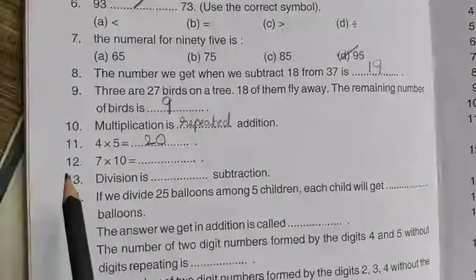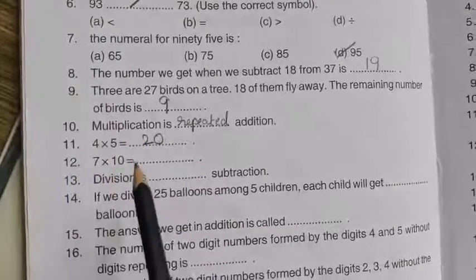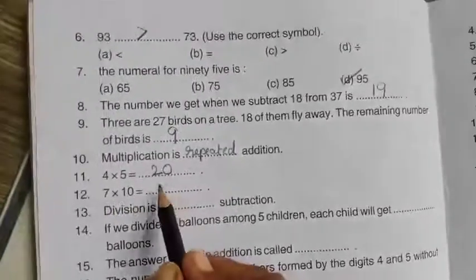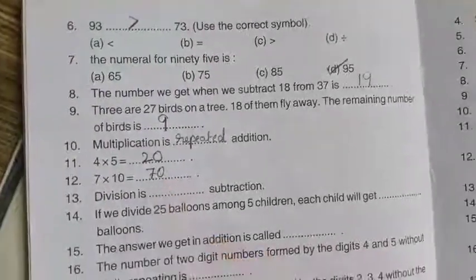Now the 12th question, 7 10's are 7 into 10. 7 10's are 70. Right here.